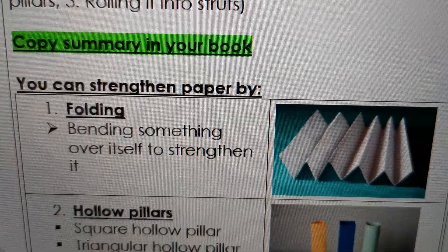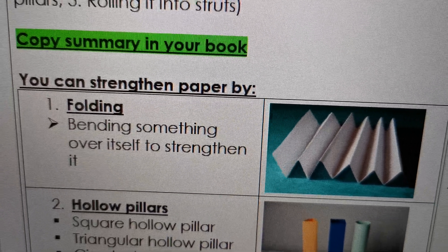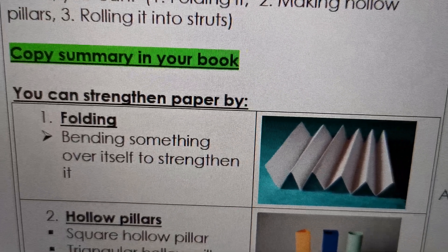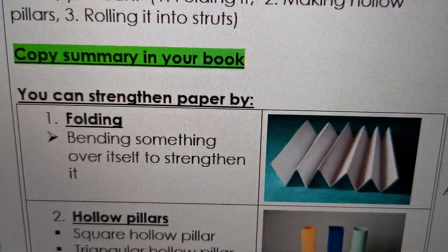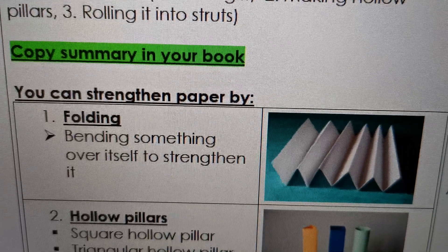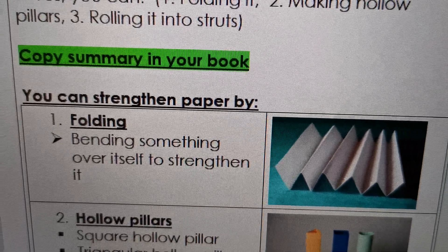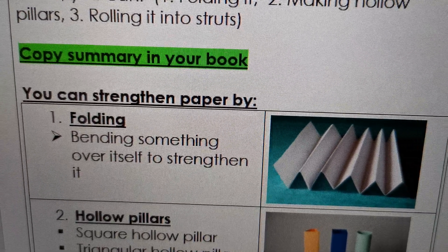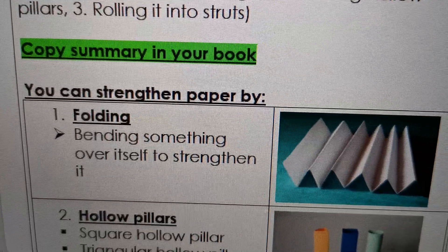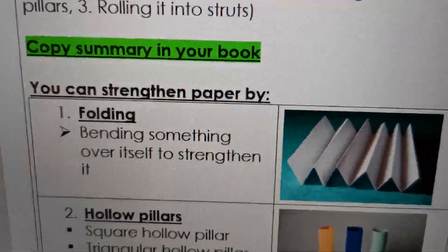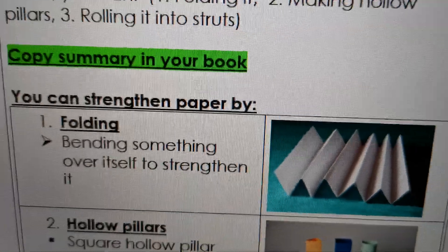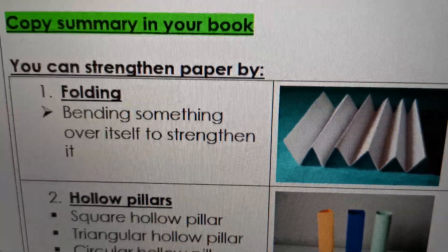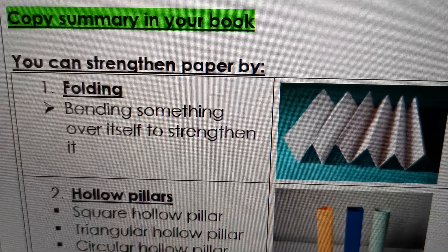So the first one is folding. You can strengthen paper by folding - if you bend it over and over itself, it becomes thicker and it becomes stronger. There are many examples in real life of folding. Have you ever torn a piece of cardboard? You will see folding inside. Even the outside of a cupcake holder is also being folded to make it stronger.